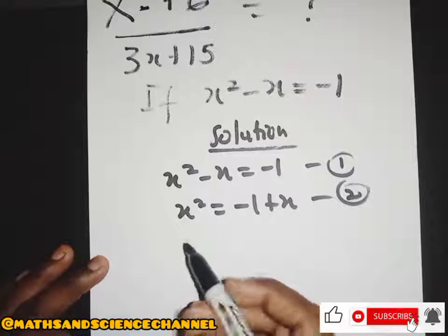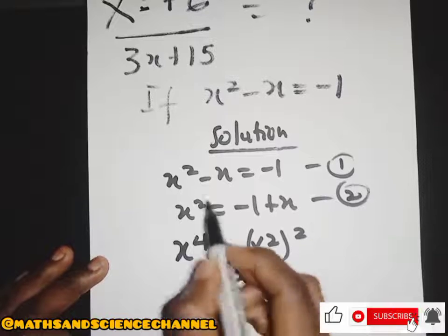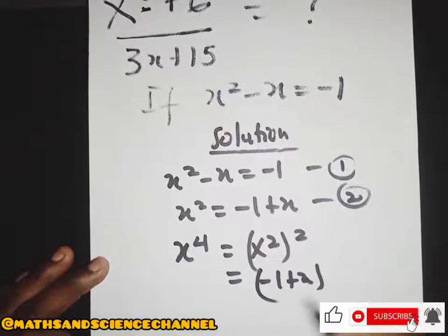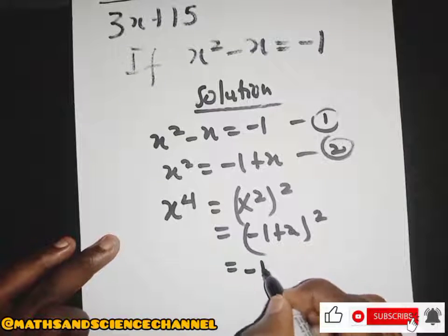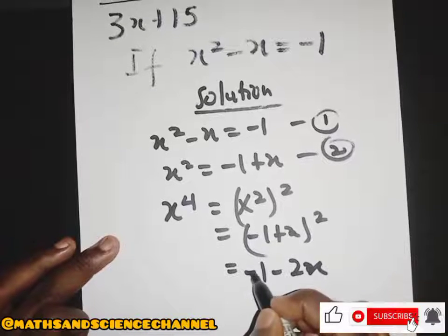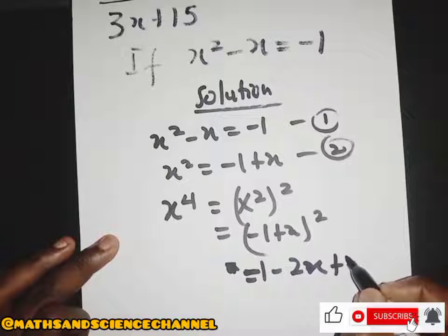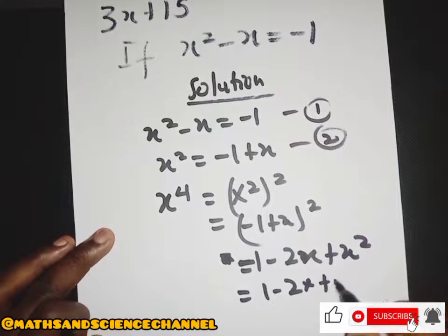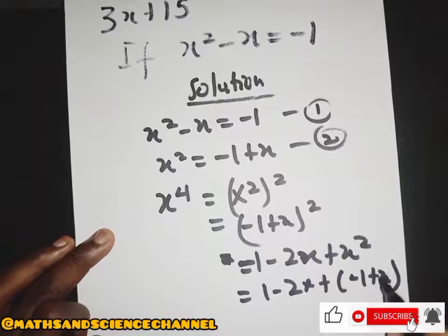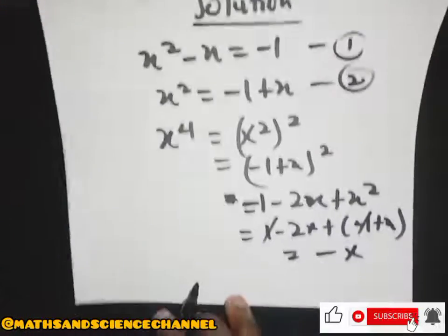Now, since we have s to the power of 4, let's square s squared again. So s to the power of 4 is just s squared all squared. But s squared is just negative 1 plus x, and when we square that we get s to the power of 4 equals negative x. Remember, using 1 minus 2x and substituting s squared as negative 1 plus x, these terms cancel and we get s to the power of 4 equals negative x.